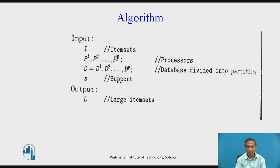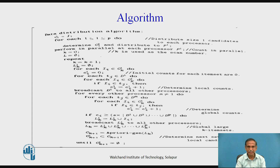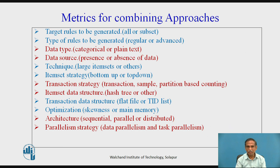The algorithm takes item sets and p processors defined for p partitions in the data sets, d1 up to dp, with a support s. The output is the large item sets to be generated. We keep on adding to the item sets, then generate a local count for each partition, and merge these counts to find a global count for the data set, which tells us about our large item sets.